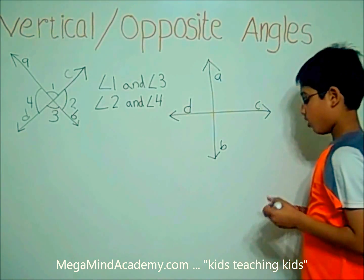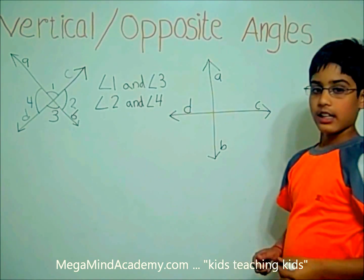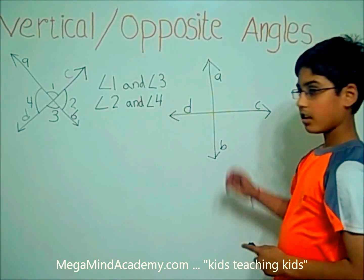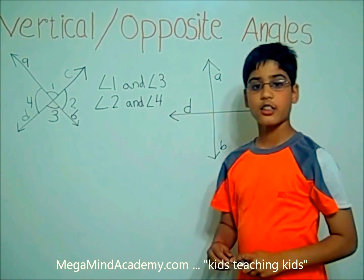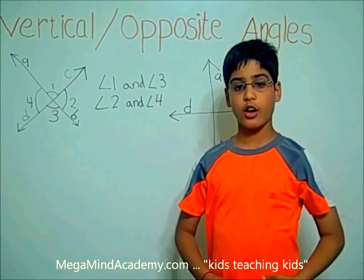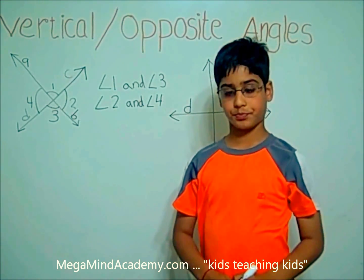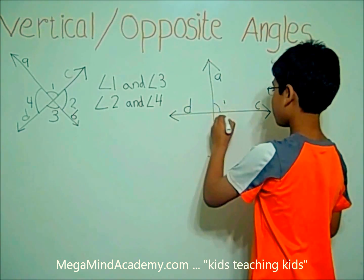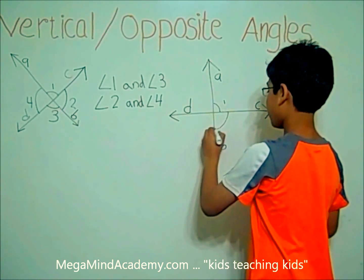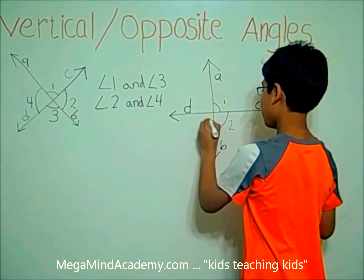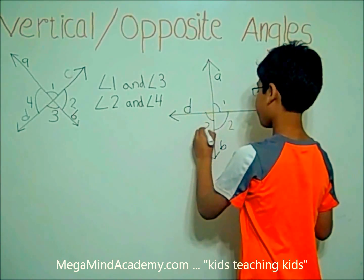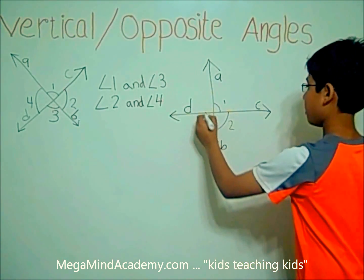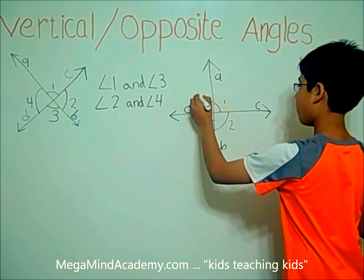When line AB and line CD crossed, they formed four angles: angle 1, angle 2, angle 3, and angle 4.